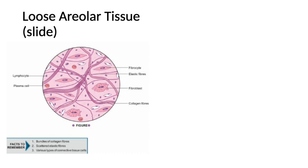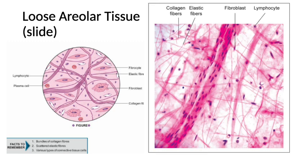Loose areolar tissue has all three types of fibers — collagen, elastic, and reticular. Cells present are fibroblasts, macrophages, plasma cells, and fat cells, all embedded in the gel-like ground substance. During staining, the ground substance is washed away, so empty spaces called areolae are seen — hence the name areolar tissue. It is present just beneath the epithelium, in the superficial fascia, or surrounding blood vessels. Functions include providing support, a plane for movement, and space for expansion of viscera.